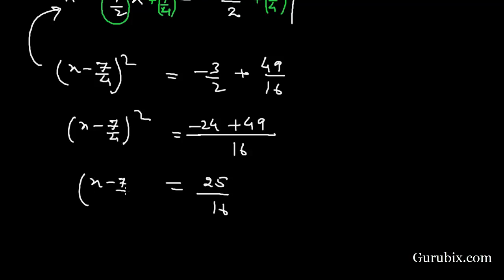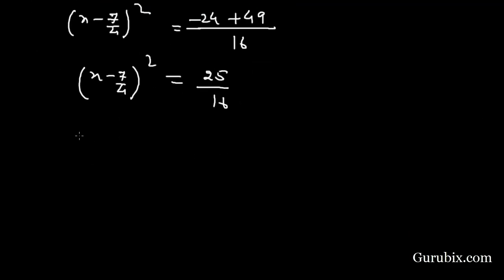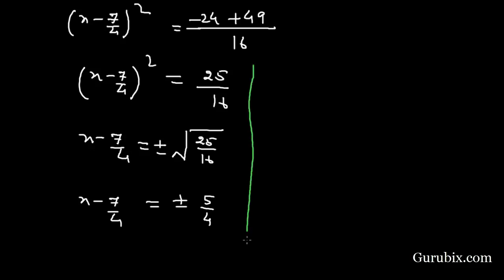This means (x - 7/4)² = 25/16. We shall take the square root: (x - 7/4) = ±√(25/16). This equals ±5/4. This means there are two values of x.